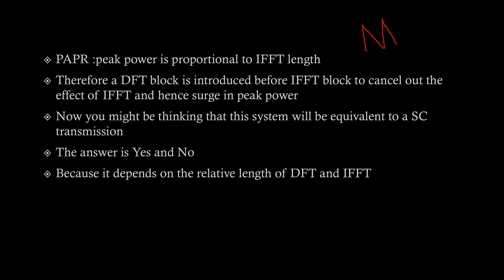What do we mean by relative length? Let's say the DFT length is K and the IFFT length is M. If K equals M, then obviously it will be equivalent to a single carrier system. But in wireless technologies — that is 5G NR and LTE — we always keep K less than M. Always keep this in mind.